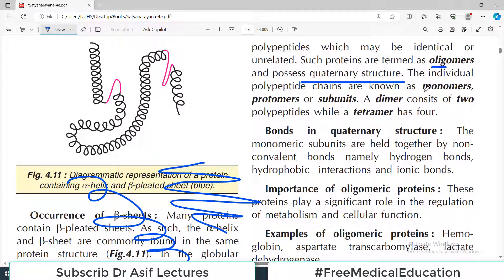The individual polypeptide chains are known as monomers, subunits, or protomers. Either call it monomer, protomer, or subunit. If there are two subunits, it is known as a dimer. If there are four, that will be a tetramer, depending upon how many subunits we are talking about.